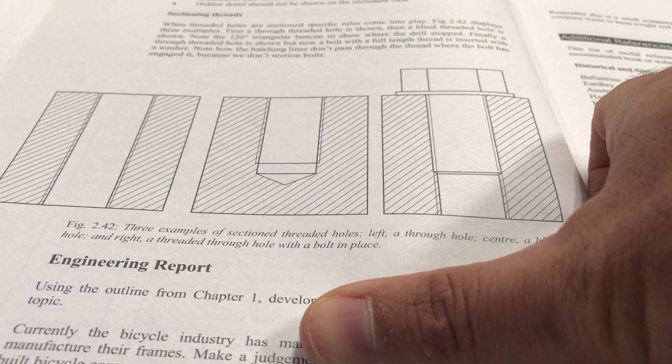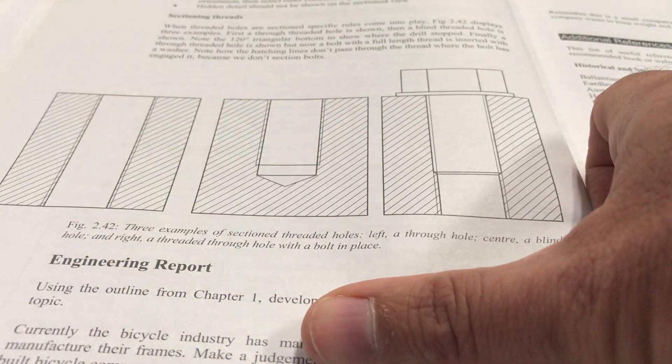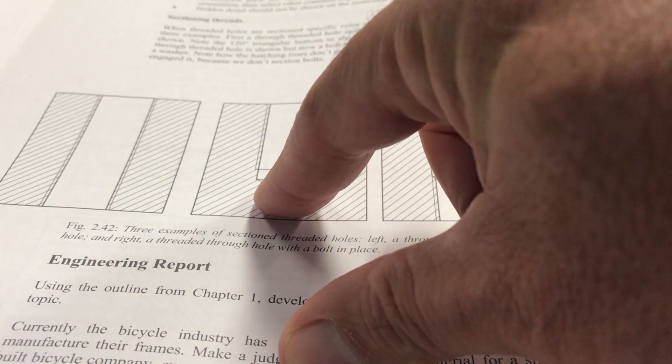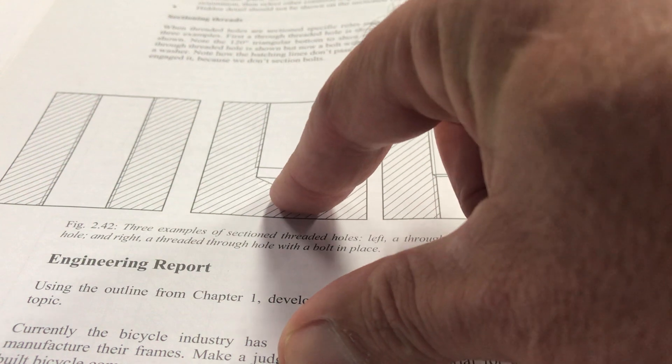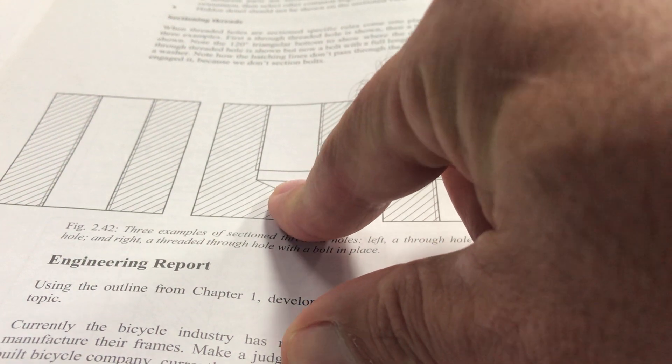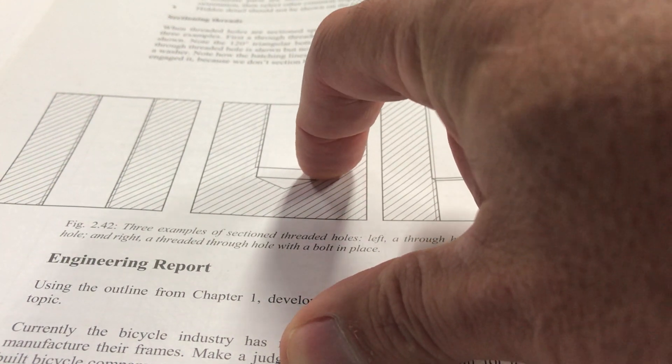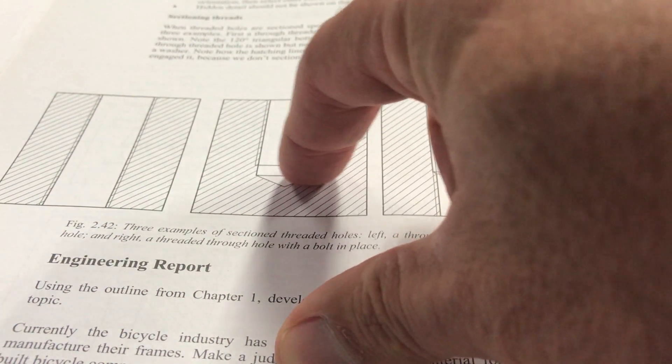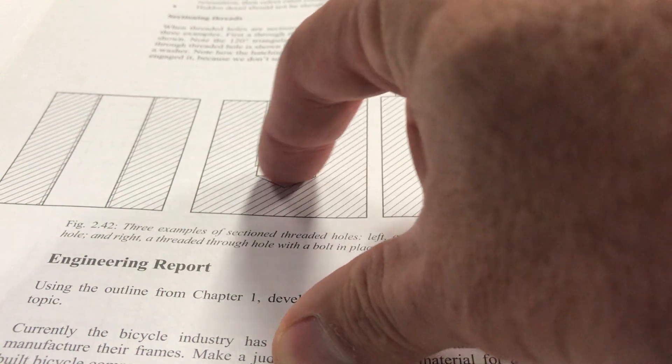So over here, this is our blind hole. So it ends at the bottom here and you can see that basically what happens with this particular drawing is that you hatch over the thread lines and then at the bottom, the thread ends at the bottom and this is the blind hole.